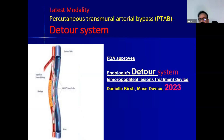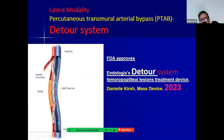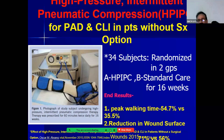A new modality that got FDA approval in 2023 is the Detour system — a percutaneous transvascular arterial bypass, which is less invasive. Through the femoral field, biological conduits are placed before and after the arterial blockage, creating a femoral bypass. This new Detour system has been approved by the FDA.